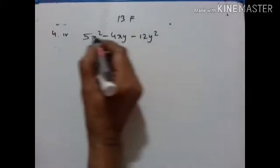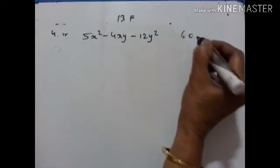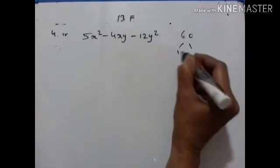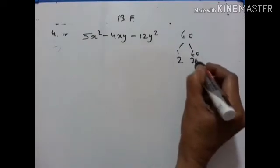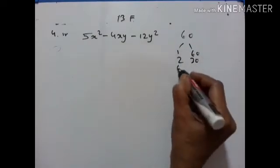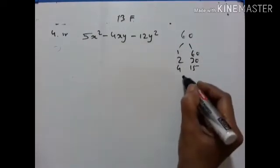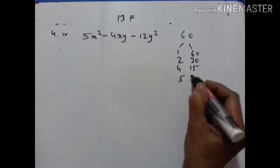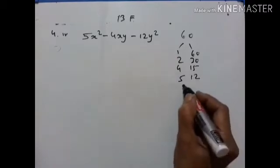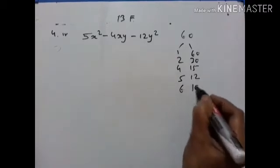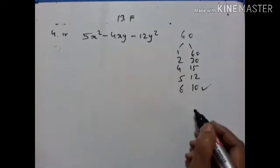Here 5 into 12 is equal to 60. So the factor pairs of 60 are: 1 into 60, 2 into 30, 4 into 15, 5 into 12, 6 into 10. This gives us 4.